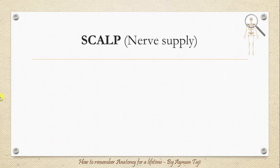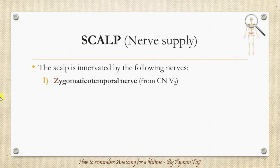The scalp is innervated by the following nerves. First, the zygomaticotemporal nerve from the maxillary division of the trigeminal nerve, then the greater occipital nerve, which is a spinal nerve that arises between the first and second cervical vertebrae.